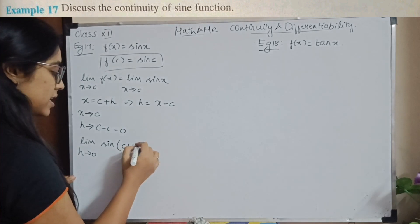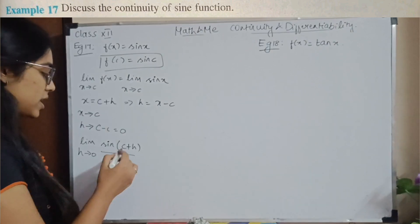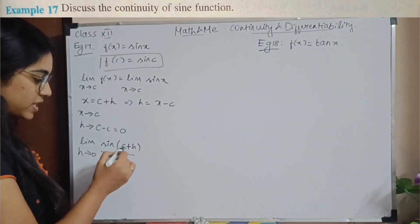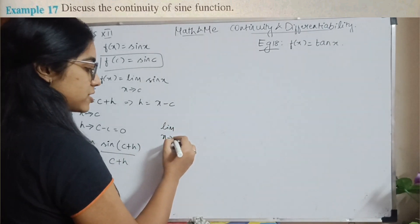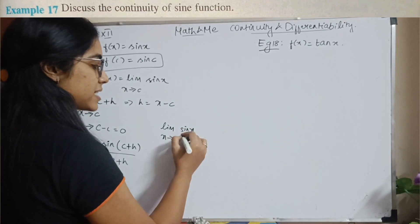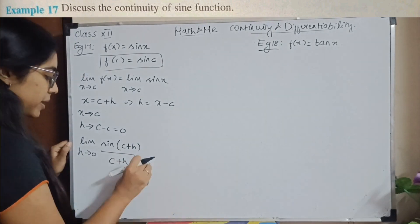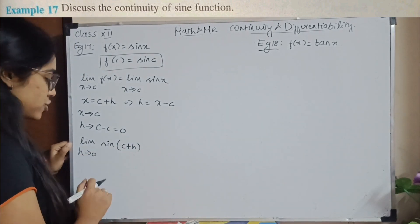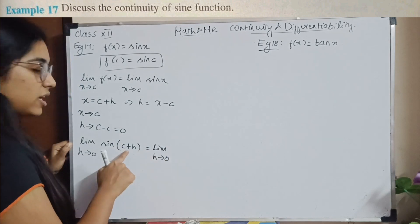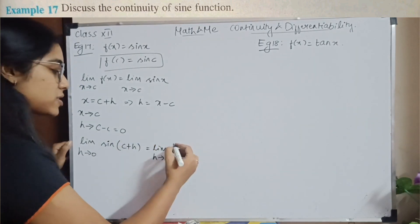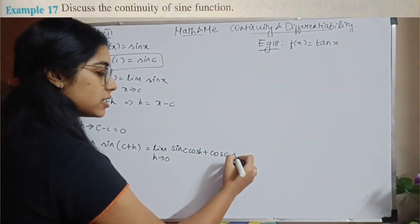Now the limit as H tends to 0 of sin(C + H). Substituting H = 0 directly would give sin C, so instead I apply the trigonometric identity sin(A + B) = sin A cos B + cos A sin B. So I have sin C cos H + cos C sin H.